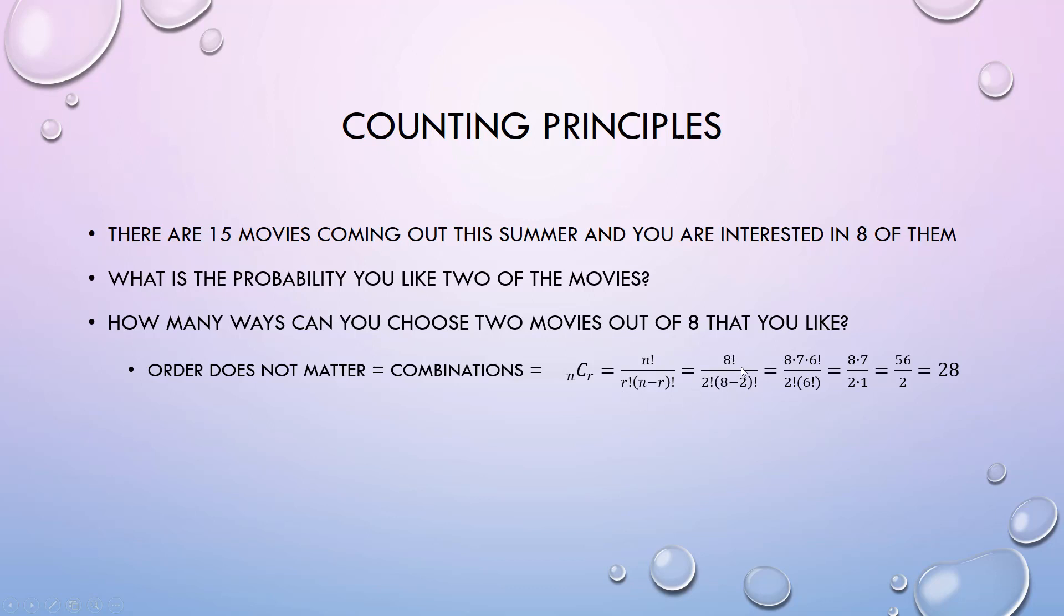Eight total that you're interested in, taking two at a time. I stop when I know that eight minus two, six factorial, can cancel, and then I can see that there's actually 28 ways, which is actually kind of surprising when you think of combinations, that I could actually choose two movies out of the eight that I like.